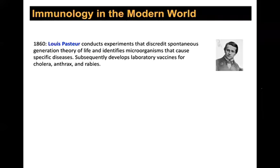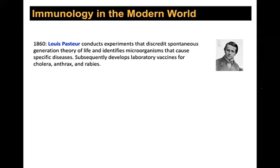Around the same time as Panem's observation about measles, we come to Louis Pasteur — a central figure in biology. He conducted experiments showing life is not just spontaneously generated, and started to identify microorganisms that cause specific diseases. He developed vaccines for cholera, anthrax, and rabies in the laboratory, and could protect laboratory animals from these diseases. This was really the beginning of intentionally figuring out: if I give you a vaccine for this, I can protect you against the disease.